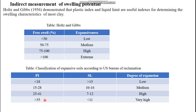The last factor is water content, which must be related to various Atterberg limits. Various scholars have developed correlations for determining expansiveness. Holtz and Gibbs (1956) provided a relation based on free swell values — soils with a free swell value greater than 100% are considered highly expansive. The U.S. Bureau of Reclamation uses plastic index and linear shrinkage values: soils with a plastic index greater than 35 and linear shrinkage less than 11 are categorized as very highly expansive soils.